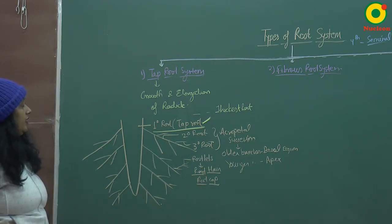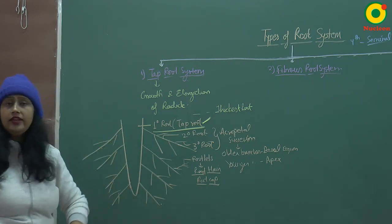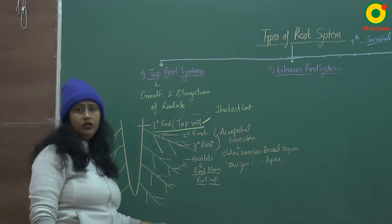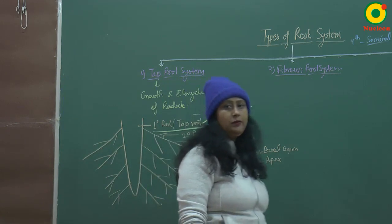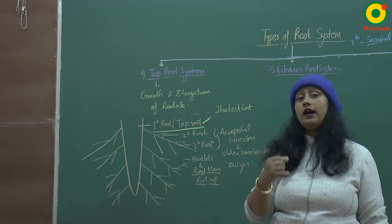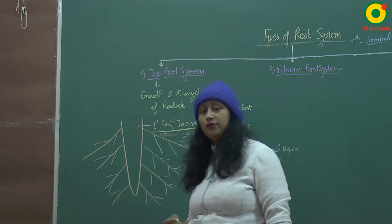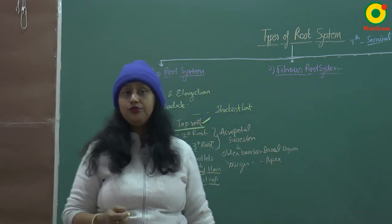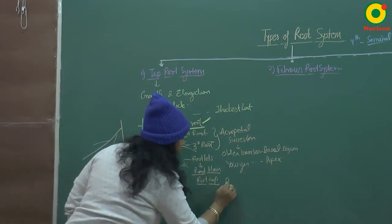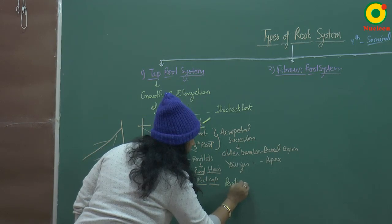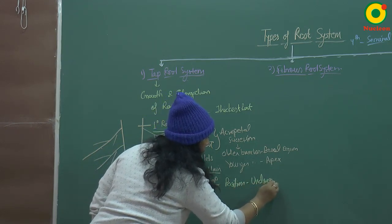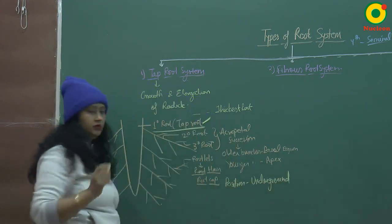Talking about its position, the tap root is always below the ground — it is always present below the ground. You might think that roots are always underground, but there are certain adventitious roots which are present above the ground also. Position-wise, tap roots are underground.